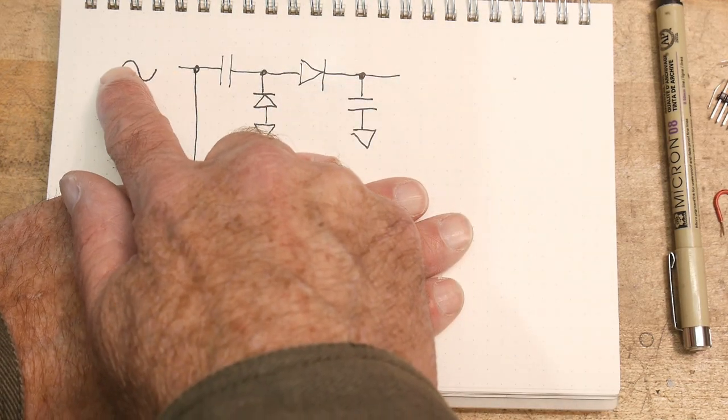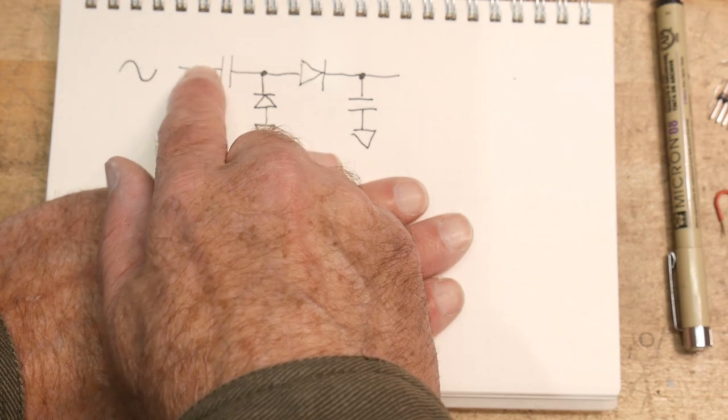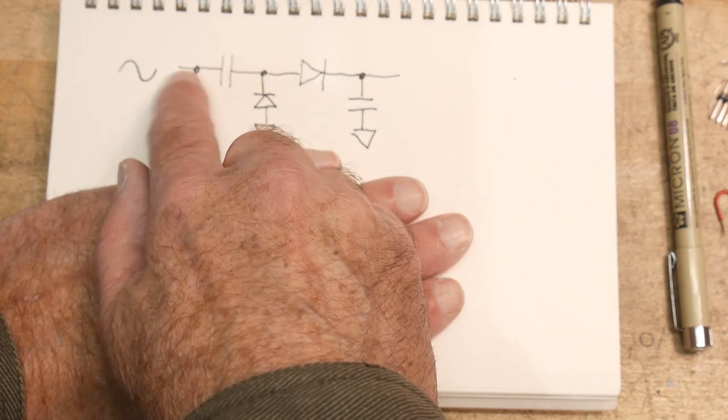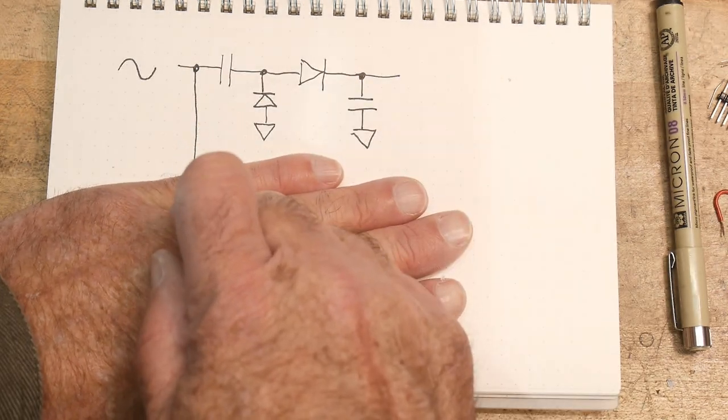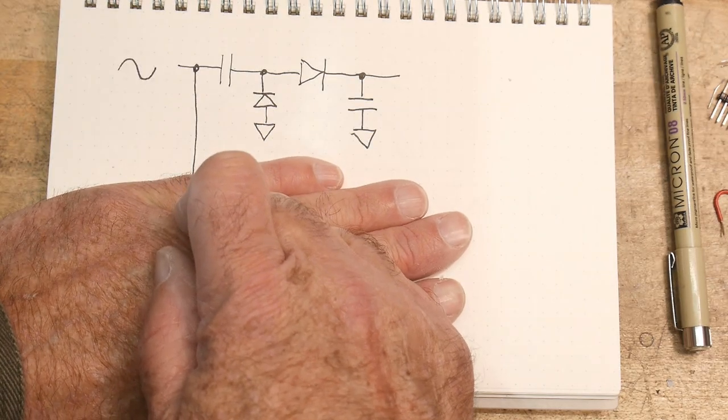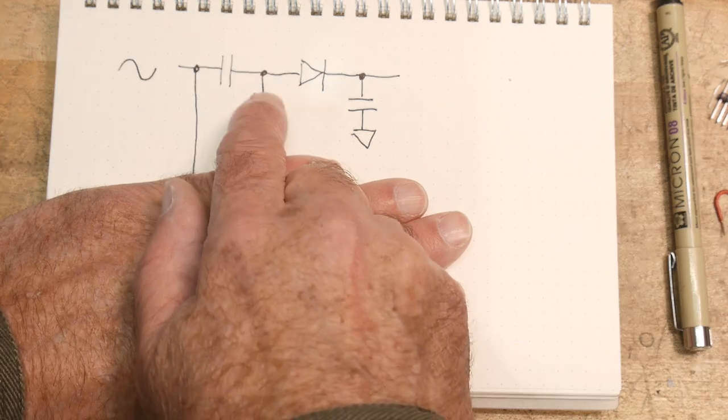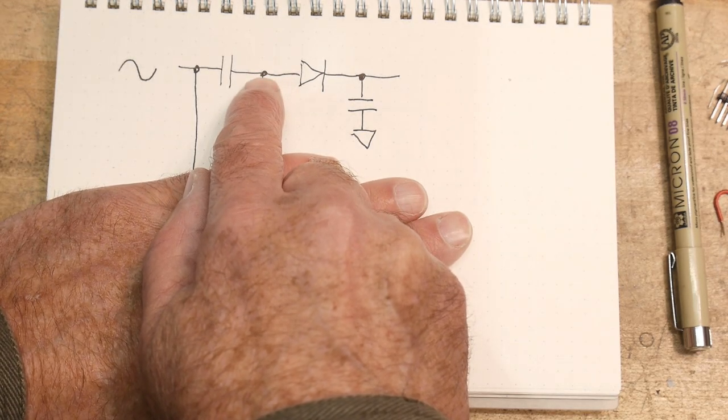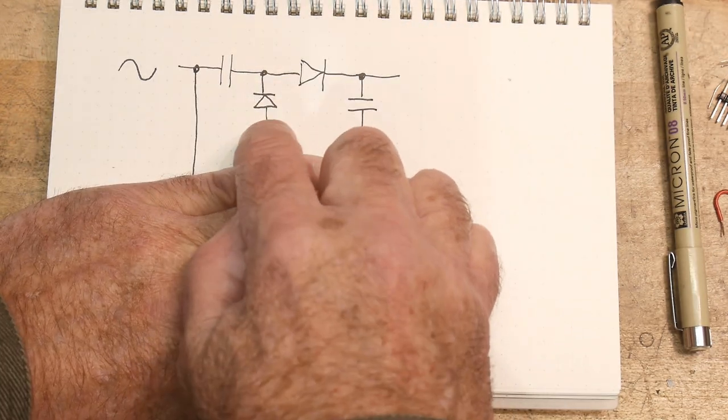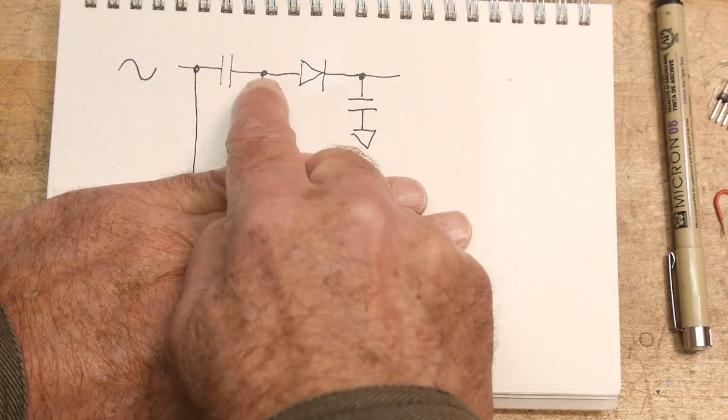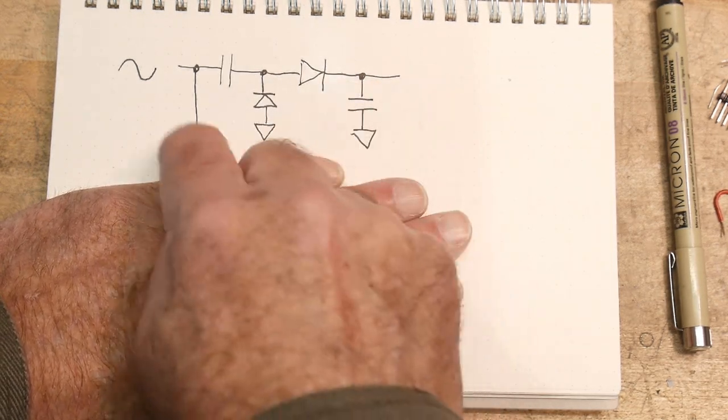So we have AC coming in, and it goes through this capacitor, and then it gets rectified and ends up being a positive voltage here. I was a little sloppy in my last explanation, but this diode makes sure that there is some DC level here. If there's no DC level, then this thing can kind of just go everywhere, so this clamps it to a particular voltage here. And then we get some voltage out here.